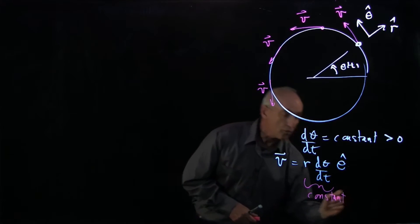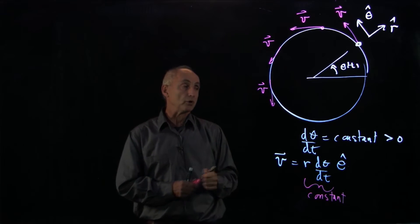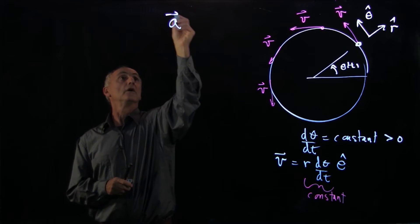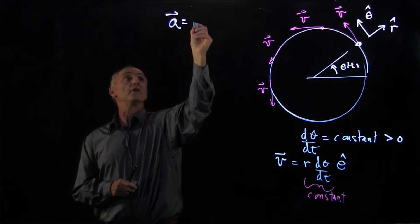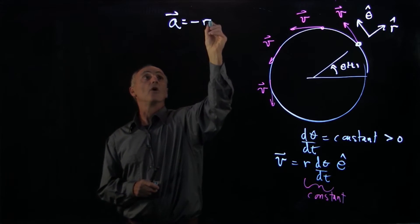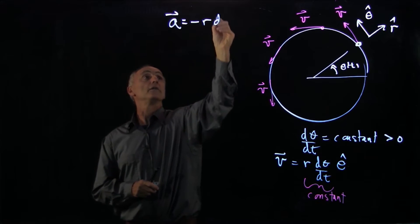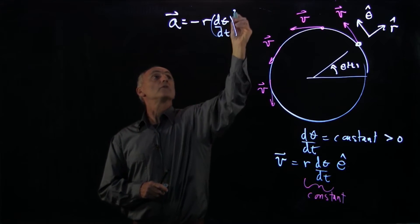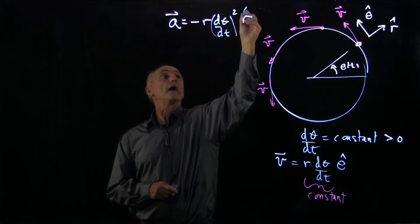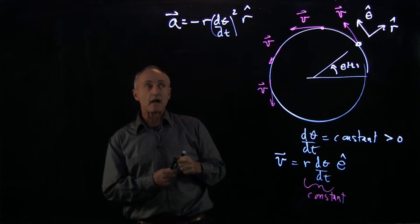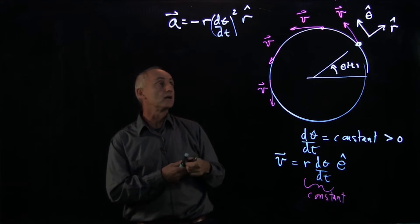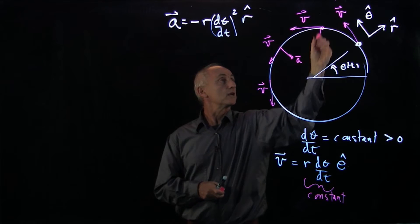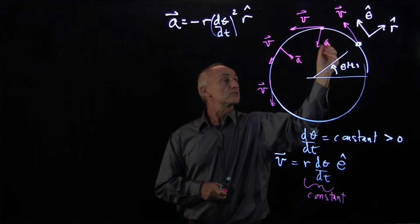So for this case of uniform circular motion, we calculated that the acceleration was equal to minus r(dθ/dt)² r̂, which means that at every point, the acceleration vector is pointing towards the center.